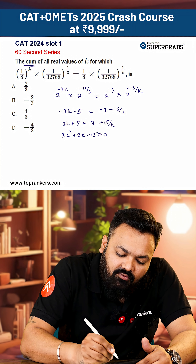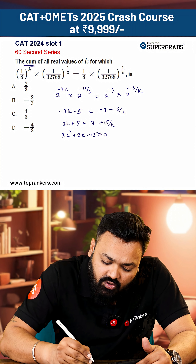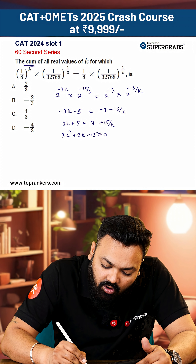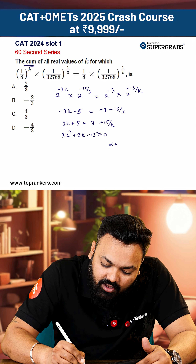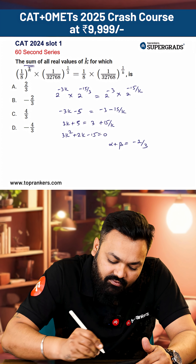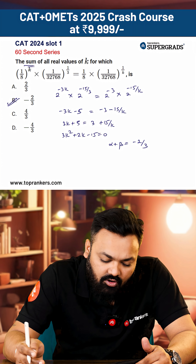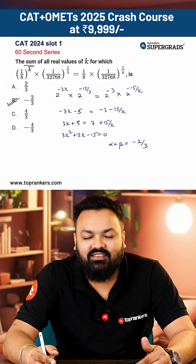They've asked for the sum of all real values of k, so the sum of all real values of k will be the sum of roots, which is minus 2 upon 3. We can see that the answer is option B: minus 2 by 3.